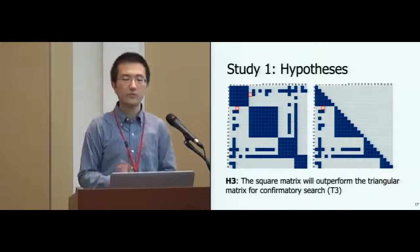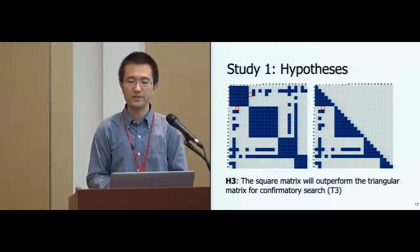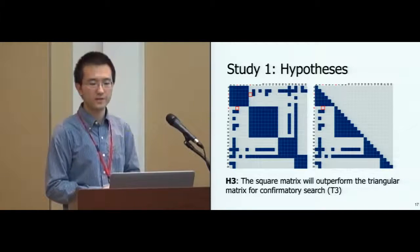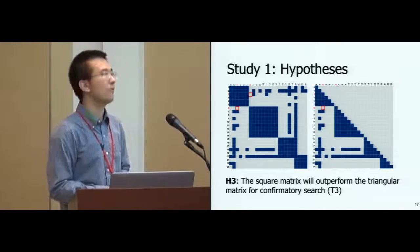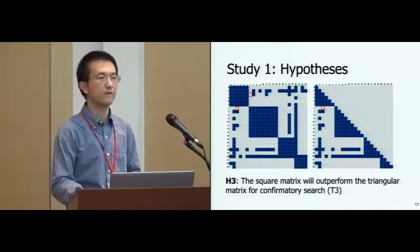Third, a square matrix encodes connection between two nodes twice in the representation, while a triangular matrix represents the connection exactly once. We predict that the square matrix will outperform the triangular matrix for confirmative search.